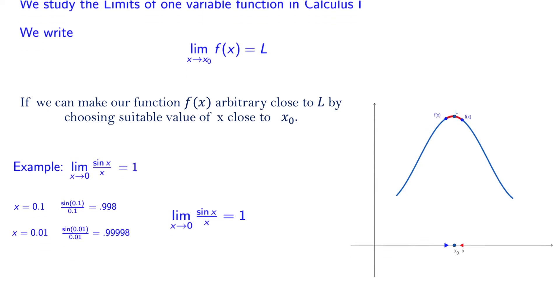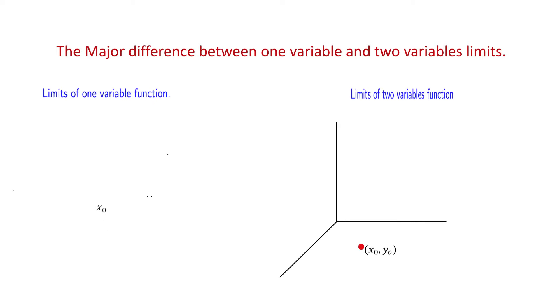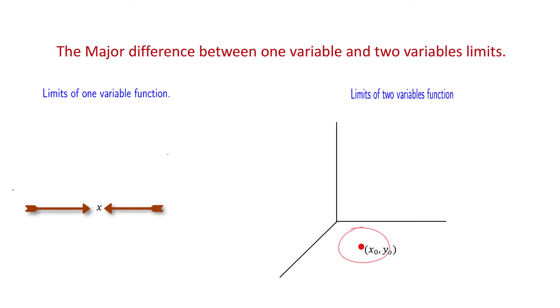Before we move to the limit of two variable functions, let's understand the major difference between limits of one variable and two variable functions. In one variable, the point x₀ lies on a line, so you can approach this value only in two directions: positive or negative x. In the case of two variables, the point (x₀, y₀) lies in a plane, so it can be approached in any direction along different paths. This difference makes the limit of two variable functions a bit more complicated.